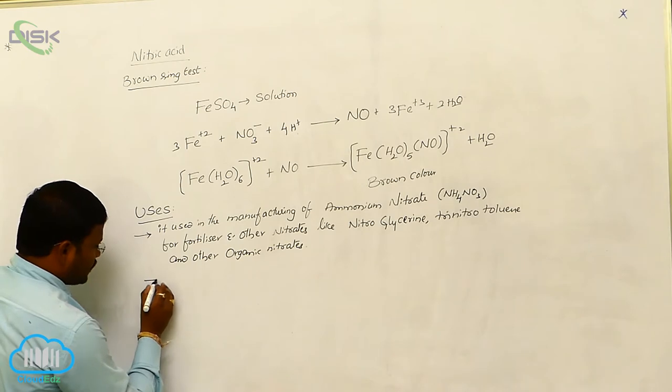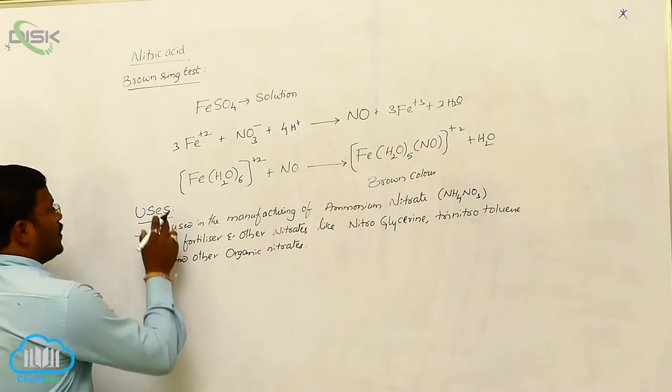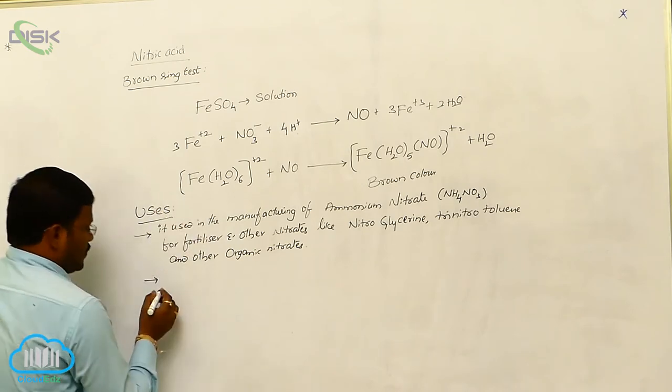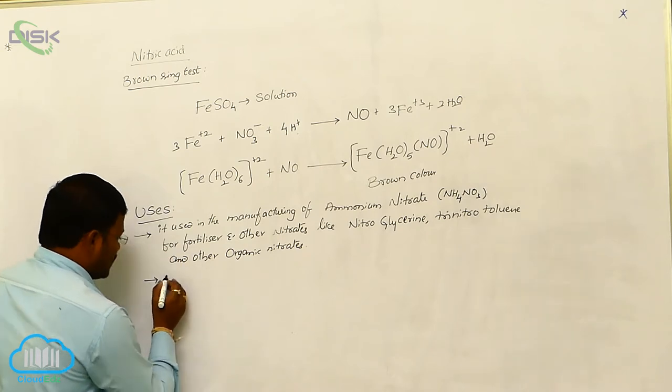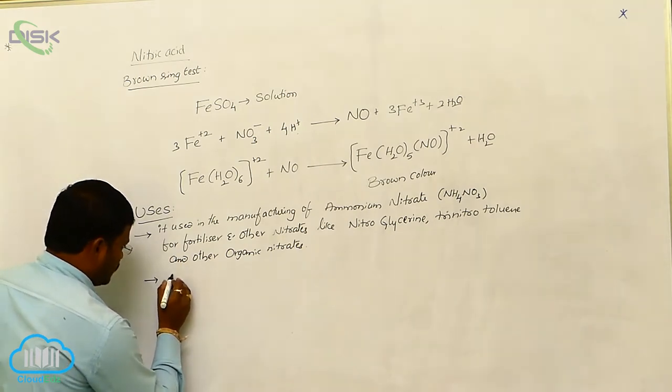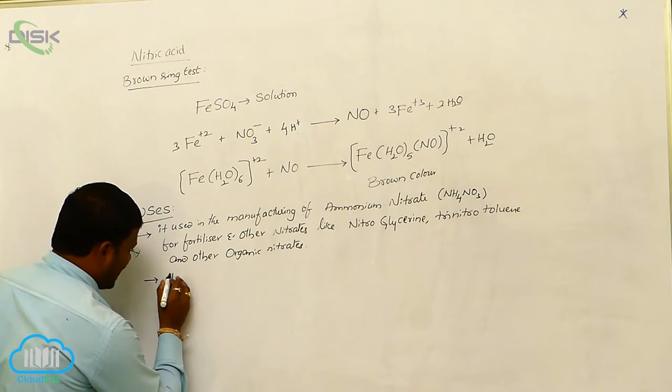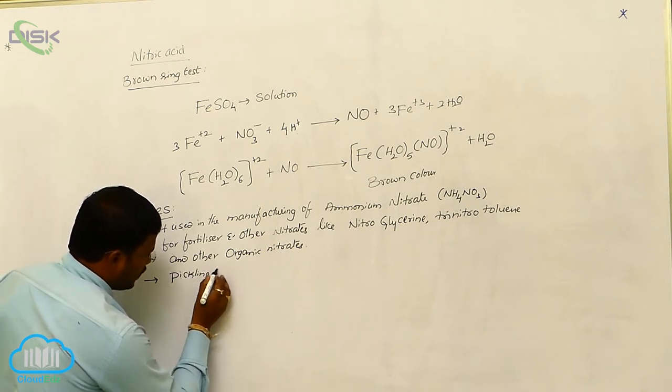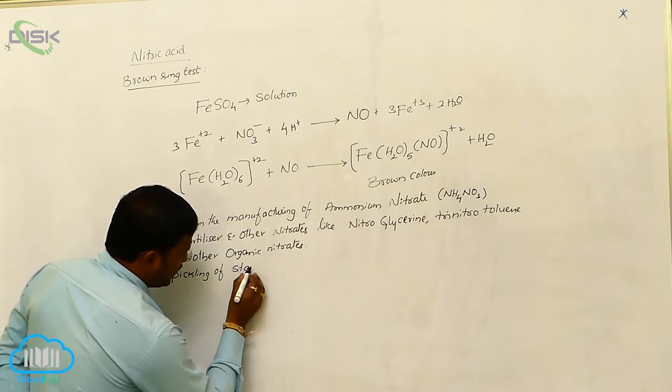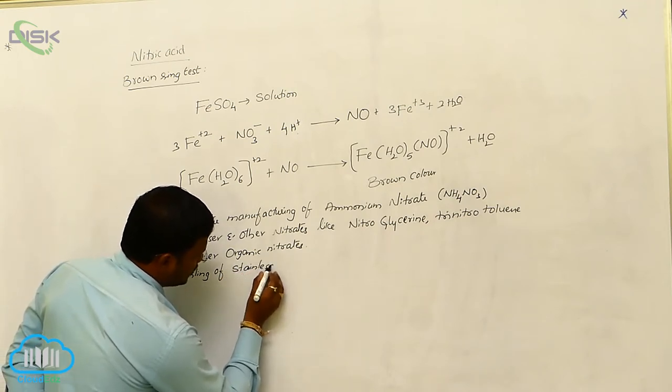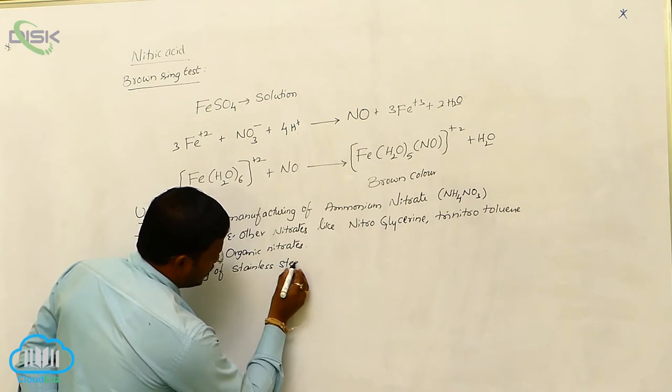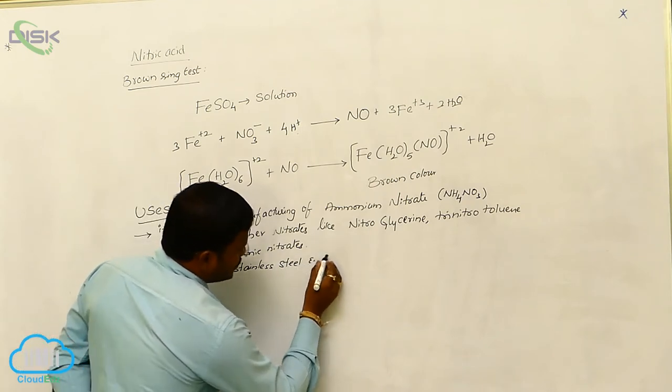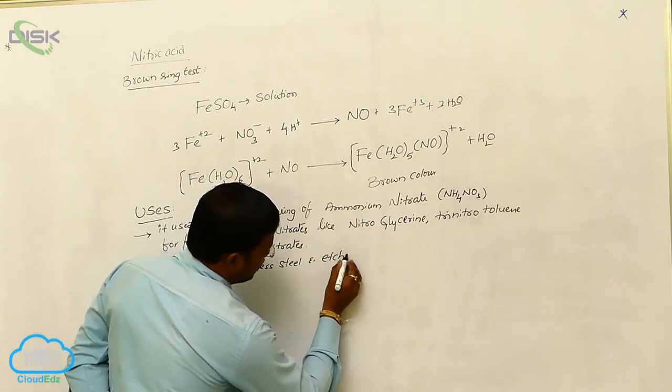Next one: the nitric acid is also used in pickling of stainless steel and etching of metals.